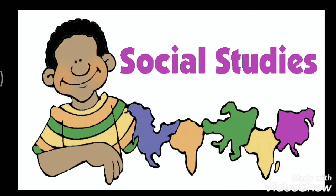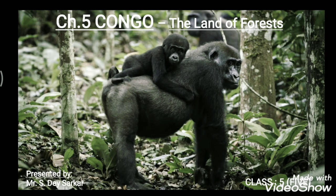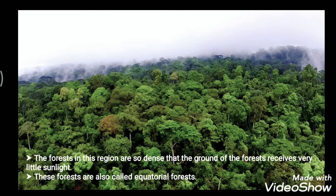Welcome back to another session of social studies. Today we will discuss the major regions of the world. The first one is the land of forests. Many dense forests are situated close to the equator, because the areas near the equator receive plenty of sunlight and rain, so the climate of this region is wet and hot.